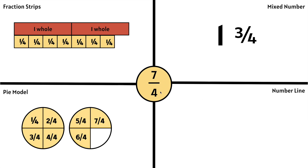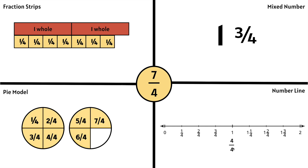Let's use a number line to show 7 fourths. We have a number line from 0 to 1 whole, broken up into 4 equal parts because the denominator is 4. Counting: 1 fourth, 2 fourths, 3 fourths — 1 whole would be 4 fourths. From 1 to 2 wholes is also broken into 4 equal parts. We can say 1 and 1 fourth, 1 and 2 fourths, 1 and 3 fourths — or 4 fourths, 5 fourths, 6 fourths, 7 fourths. So 1 and 3 fourths is the same thing as 7 fourths, which is very close to 2 wholes.